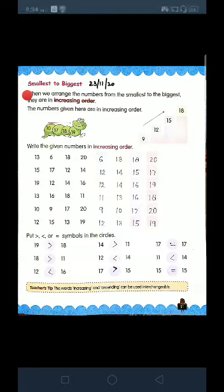Now page number 51 is about smallest to biggest. Here you will arrange the numbers from smallest to biggest, means the numbers will be arranged in increasing order. That is, first you will write the smallest number, then bigger than that, and so on.